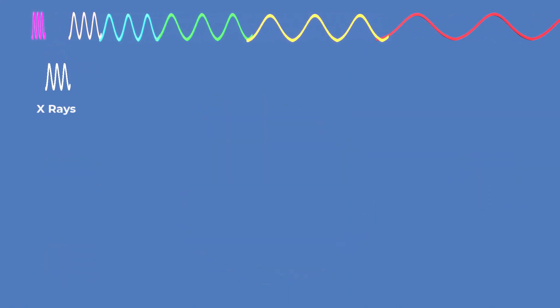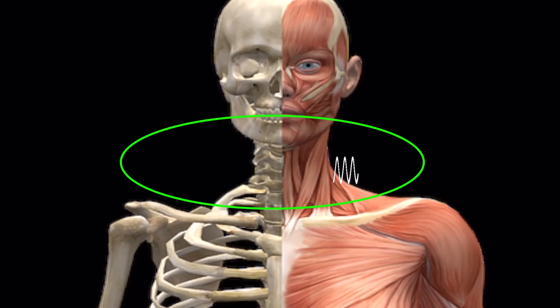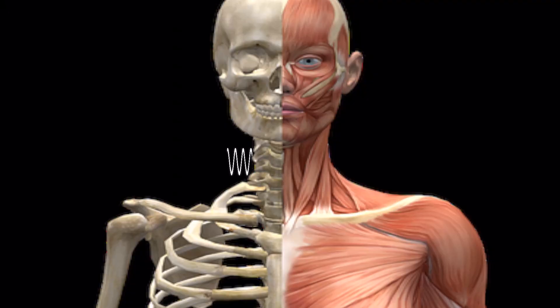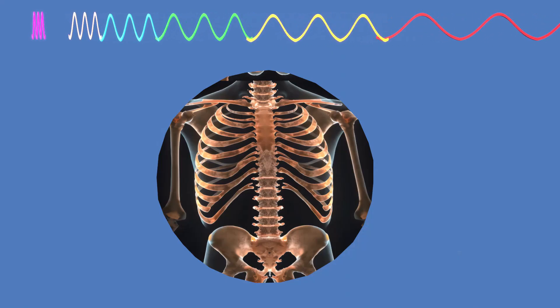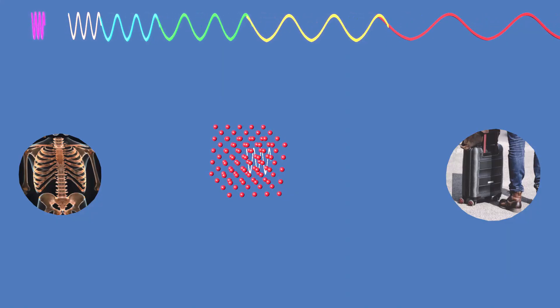Next are x-rays, which have even shorter wavelengths and higher energy. They can pass through soft tissues but are stopped by bone, making them essential for medical imaging, security scanning, and scientific research.